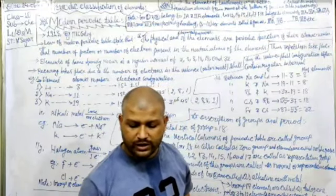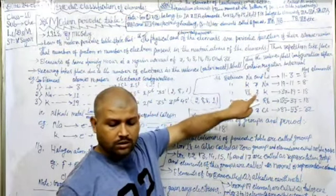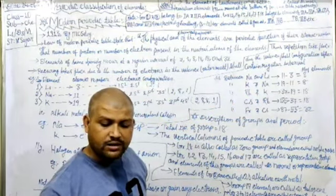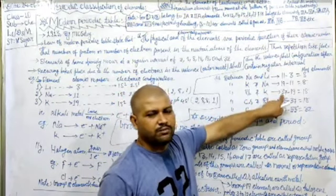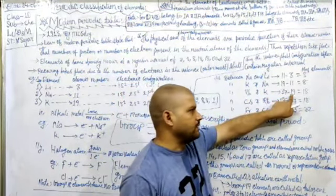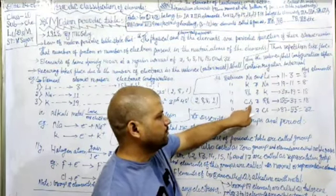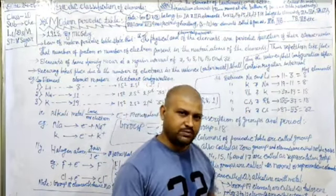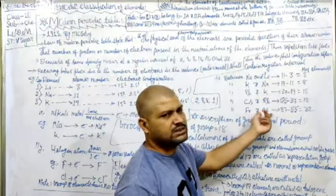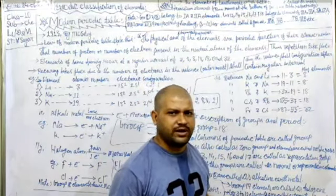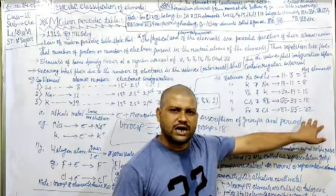You can look at the periodic table. In the third period, between sodium and argon, there are 8 elements. Between rubidium (37) and potassium (19), subtracting gives 18 elements in that period. Between cesium (55) and rubidium (37), there are 18 elements. And between francium (87) and cesium (55), there are a total of 32 elements in that period. So you understand why repetition takes place, how it takes place, and how many numbers occur between the repetitions.